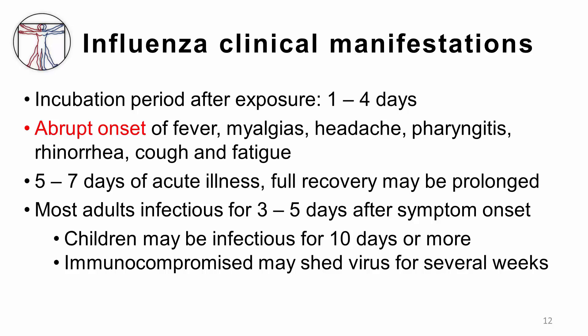Adults shed influenza virus from approximately one day before symptoms begin through five to ten days after illness onset. However, the amount of virus shed and presumably the infectivity of the patient decreases rapidly by three to five days after onset in experimental human infection models. Young children might also shed virus for several days before illness onset, but can be infectious for over ten days after the onset of symptoms. Severely immunocompromised persons can shed the virus for several weeks or even months.